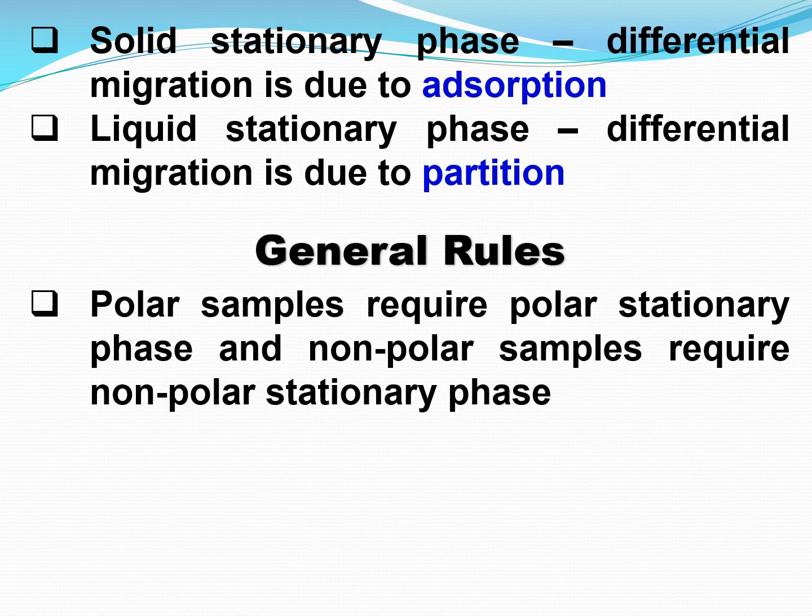Now there are some general rules to be followed in chromatography. The first rule is: polar samples require polar stationary phases, and non-polar samples require non-polar stationary phases. So if the compounds to be separated are polar in nature, we have to use polar stationary phases, and if they are non-polar, we use non-polar stationary phases.